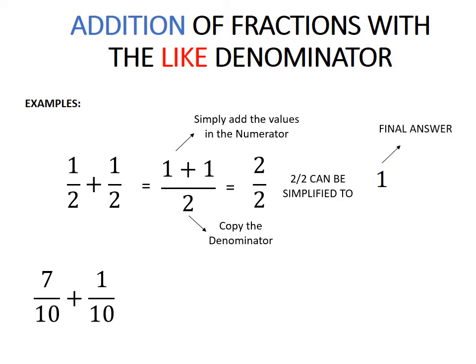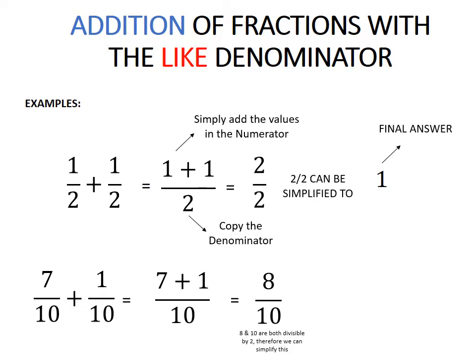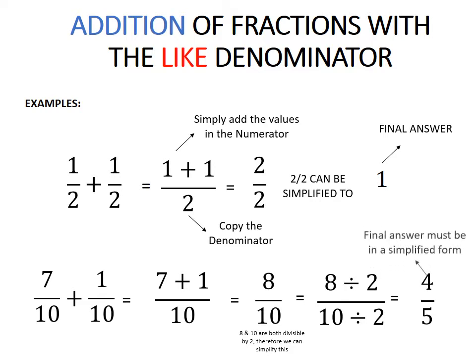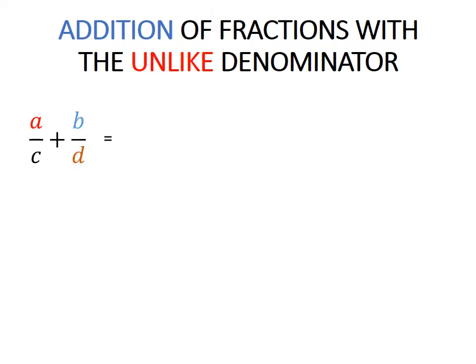Another example: 7 over 10 plus 1 over 10 equals 7 plus 1 over 10, which equals 8 over 10. 8 and 10 are both divisible by 2, therefore we can simplify this. 8 divided by 2 equals 4, and 10 divided by 2 equals 5. So your final answer would be 4 over 5. Simplify your answer if necessary.